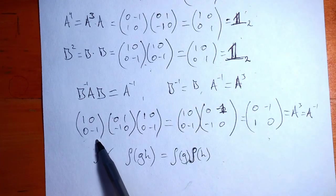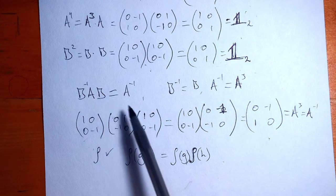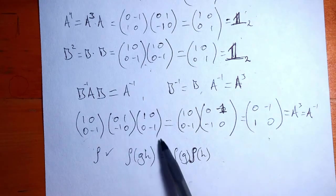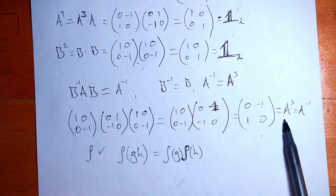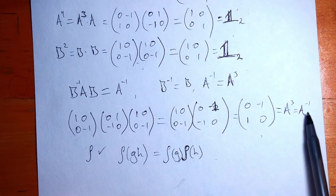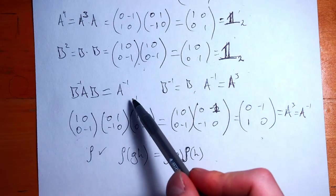So I just plug those guys in here. B inverse is just B, we have A, B, and we want to check that it's equal to A inverse. If you calculate that out, you find that it is indeed A cubed, which we know is A inverse. So this equation holds.